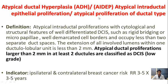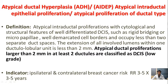The first disease entity is atypical ductal hyperplasia (ADH), also called atypical intraductal epithelial proliferation or atypical proliferation of ductal type. It is defined as having the histological and structural features of well-differentiated ductal carcinoma in situ, such as rigid bridging or micropapillae with well-demarcated cell borders, occupying less than two separate ducts. The extension of all involved lumens within one ductal operator unit is less than 2 mm; if larger than 2 mm in at least two ducts, it is classified as ductal carcinoma in situ.